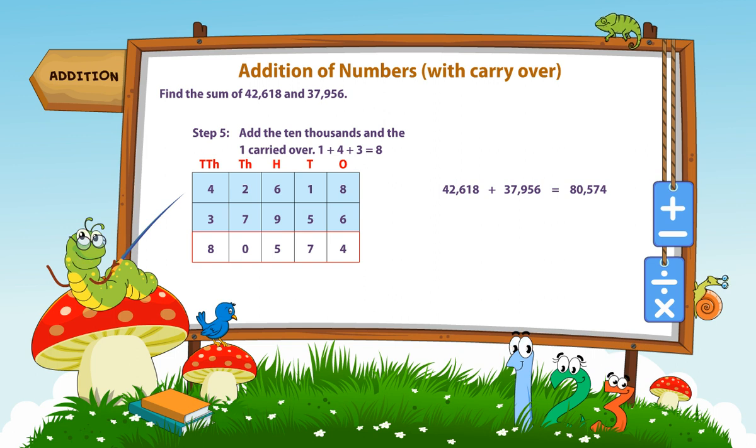So, 42,618 plus 37,956 is equal to 80,574.